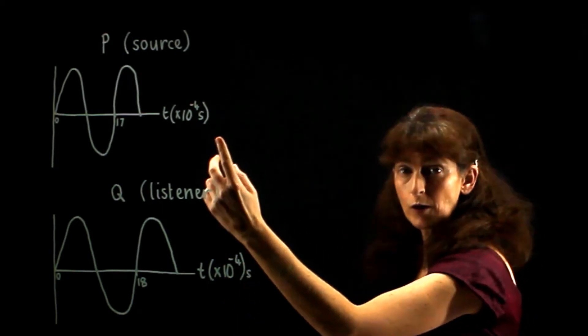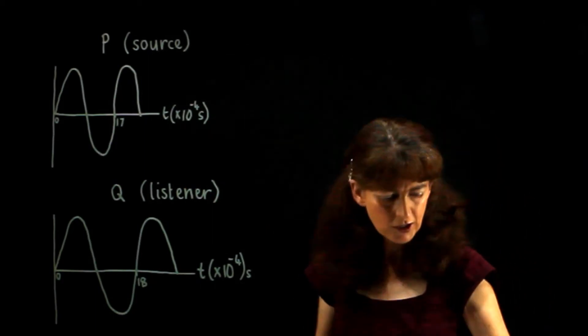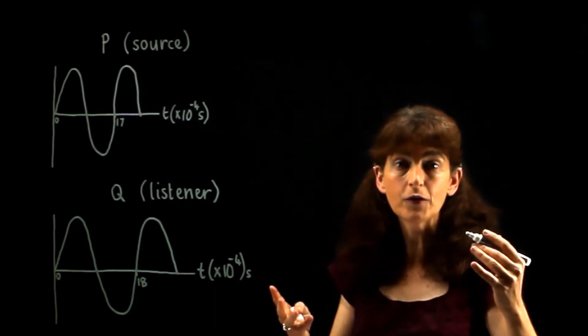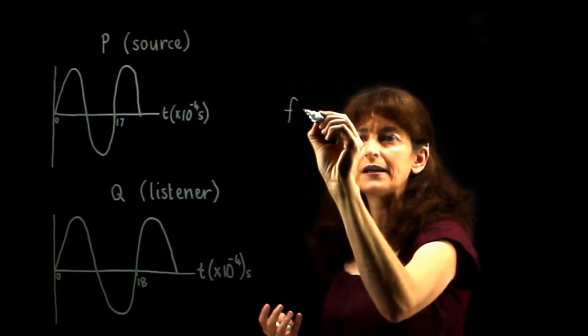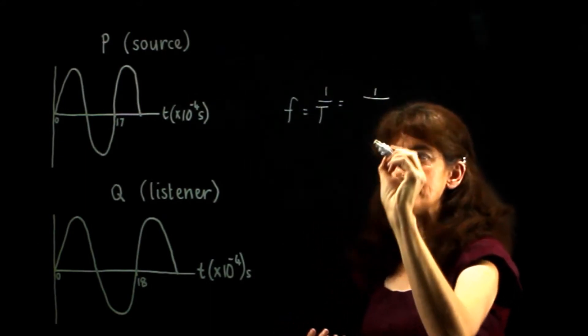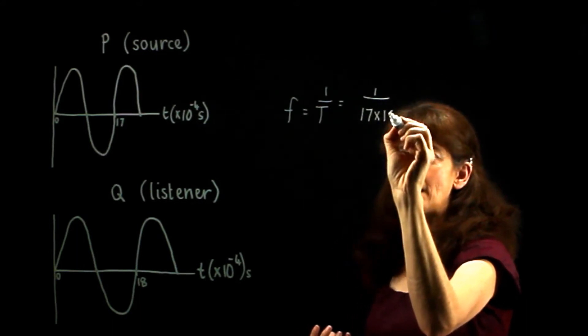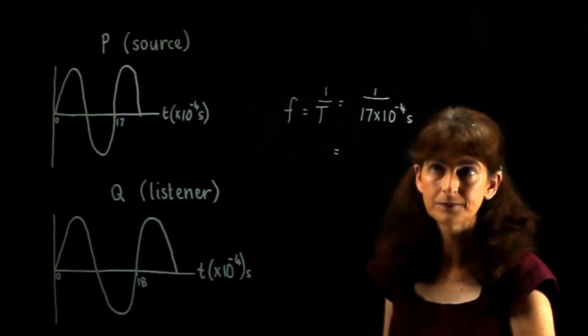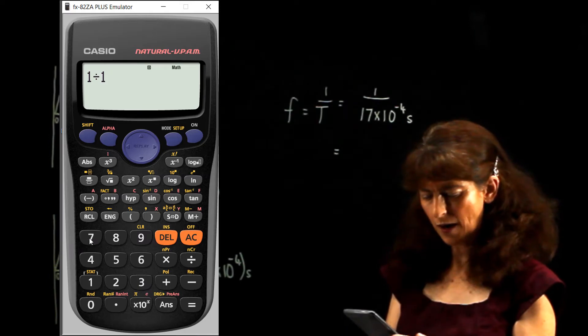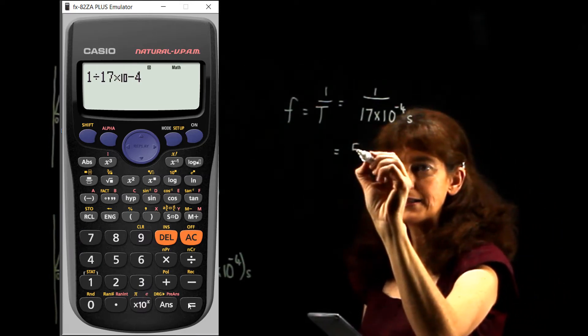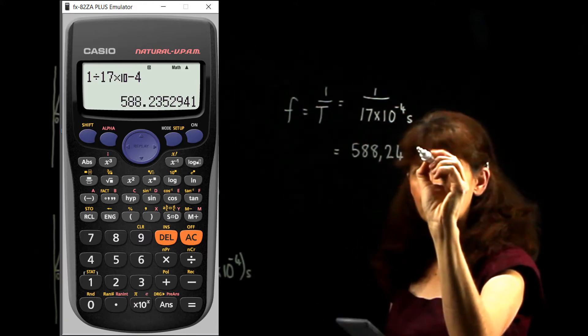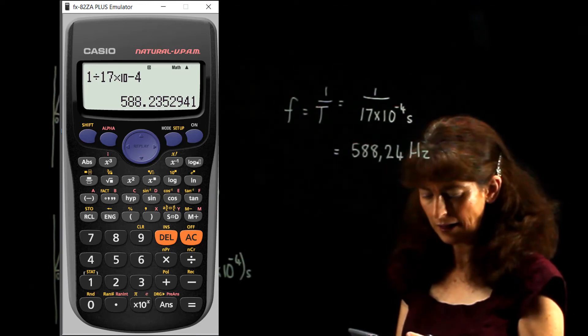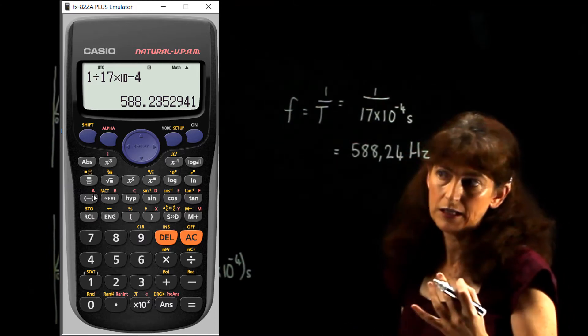We're asked to find out what the frequency is at P. We simply convert the period into its associated frequency, remembering that frequency and period are inverses of one another. Frequency is equal to one over period. The period is 17 times 10 to the power minus 4 seconds. The frequency, its unit is per second, which is the same thing as hertz. That's 1 divided by 17 times 10 to the power minus 4. Our answer is 588.24 hertz. We can put that into memory A, shift store A, because clearly we're going to use it again.